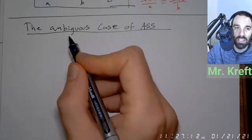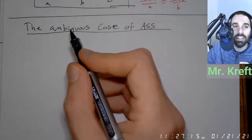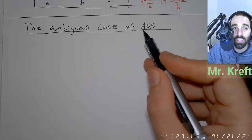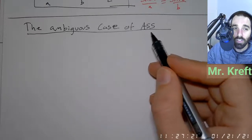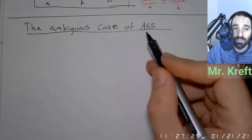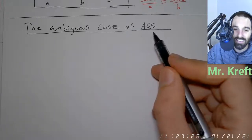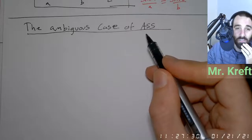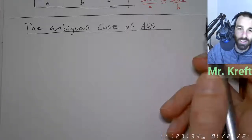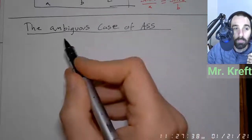We're going to learn about the ambiguous case of ASS. When I say ASS — angle, side, side. What we're talking about is the ambiguous case of ASS: angle, side, side. Or you can think of it as SSA — that's just ASS backwards.